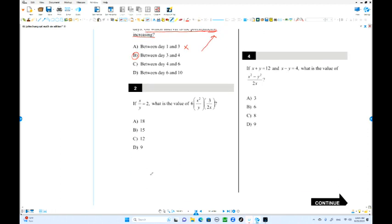Number 2: x over y equals 2. What is the value of this one? Maybe you can simplify. So 1 is out. You got 6 times x over y equals 3 over 2. We already got x over y equals 2. So 6 times 2 and this is cancelled out. 6 times 3 is 18. Or you can find x equals 2y and replace over here. You get the same answer.